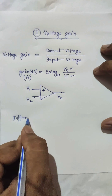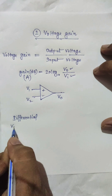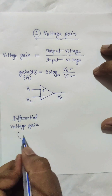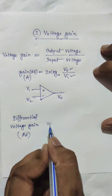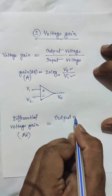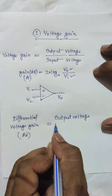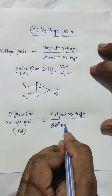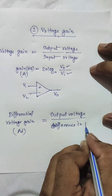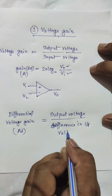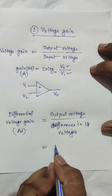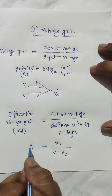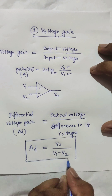Differential voltage gain — this gain is because of the difference of input voltage. V0 is calculated by output voltage divided by the difference of input voltage, V1 minus V2. This is how the gain of the op-amp is calculated.